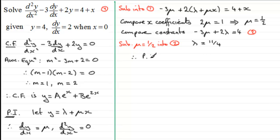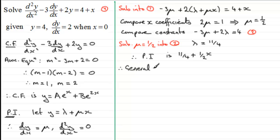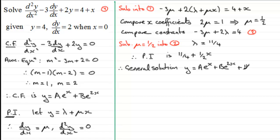So therefore we now have our particular integral. The particular integral is lambda plus mu x, which gives us 11 quarters plus one half x. That means our general solution is the complementary function plus the particular integral: y equals a e to the power x, plus b e to the power 2x, plus 11 quarters plus a half x.